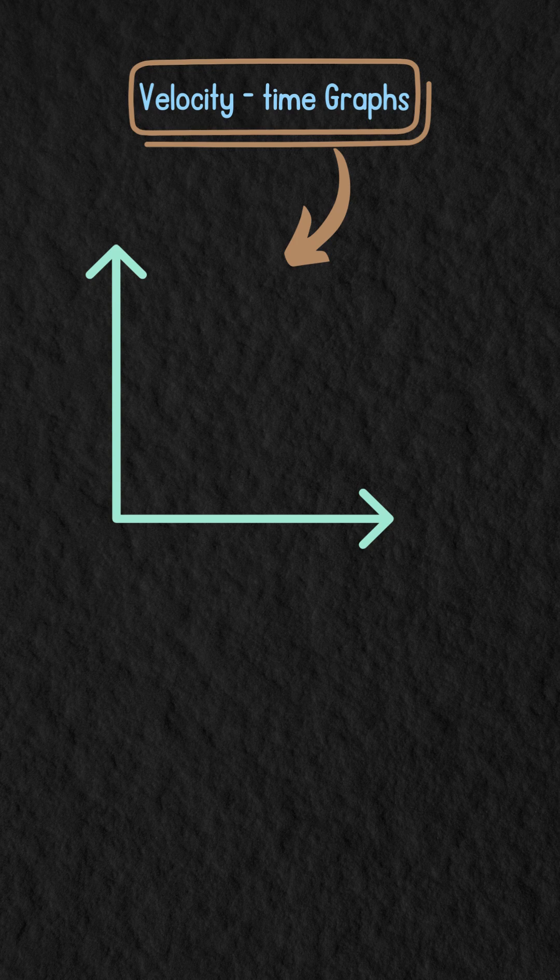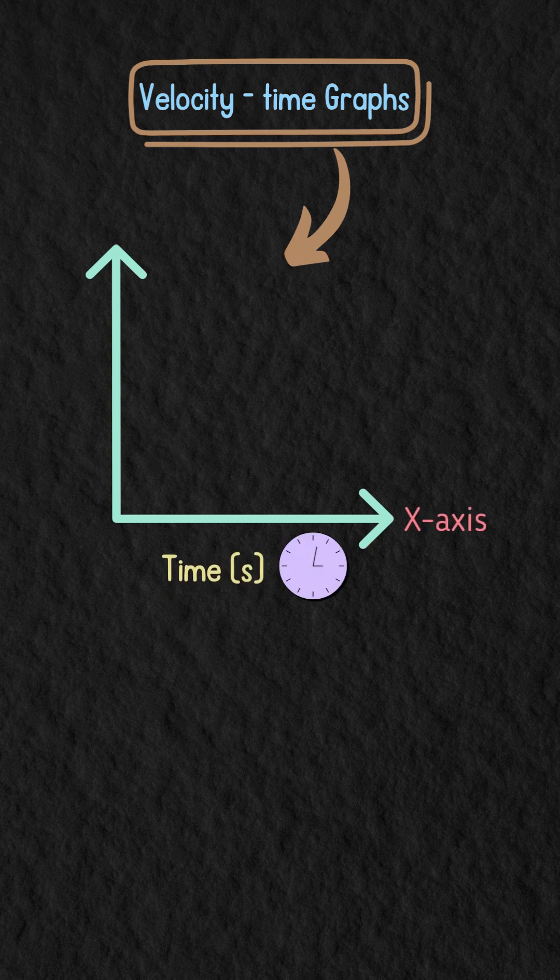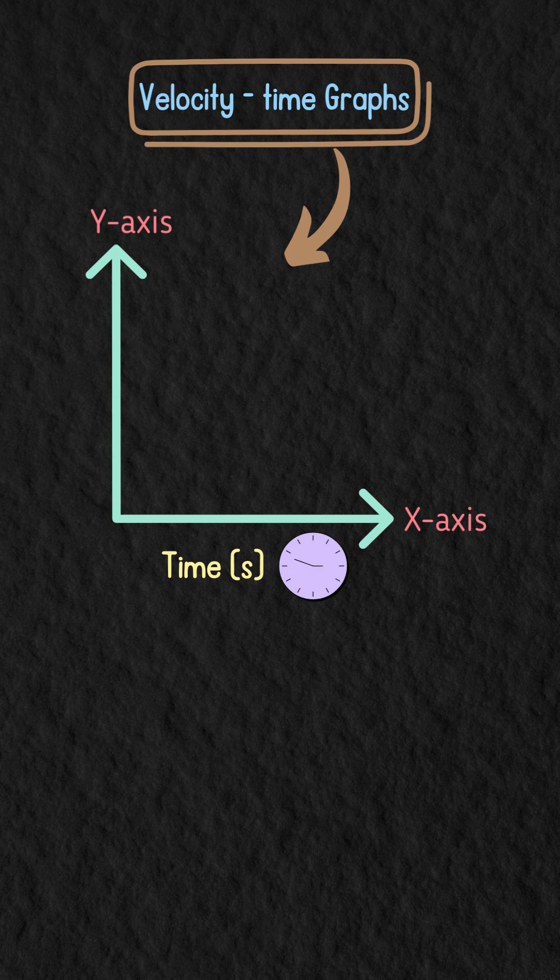On a velocity time graph, the x-axis shows time, and the y-axis represents velocity.